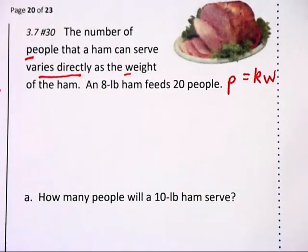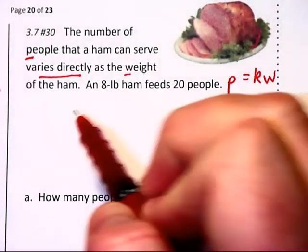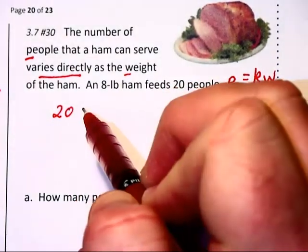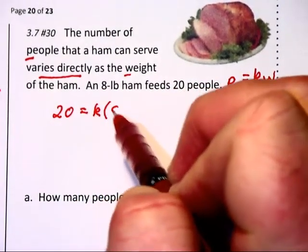Then it says an 8 pound ham feeds 20 people. So P is 20, equals K for the weight, 8.